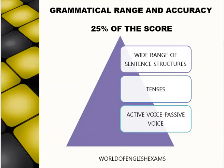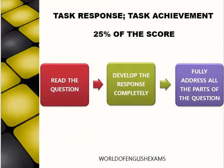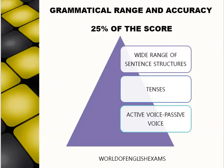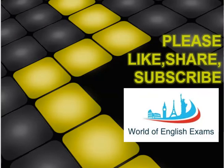To recapitulate, the four band descriptors are: task response, coherence and cohesion, lexical resource, and grammatical range and accuracy. This covers the overview of the writing module. If you liked the video, do give it a thumbs up, share it with your friends, subscribe to our channel, and stay tuned to worldofenglishexams.com for many more interesting videos.